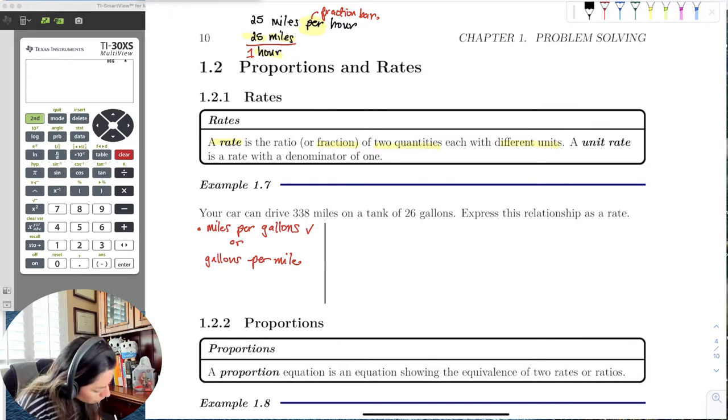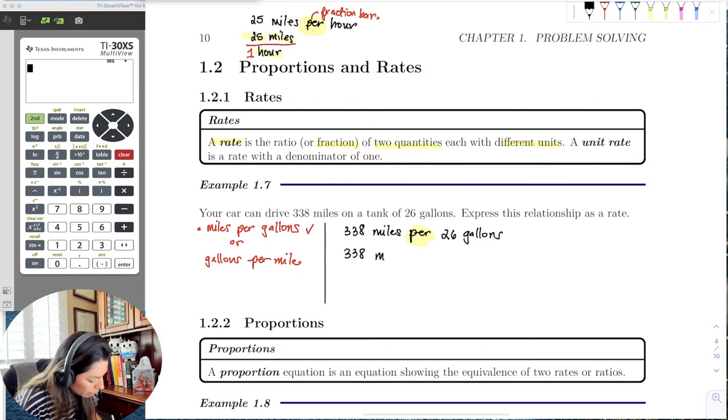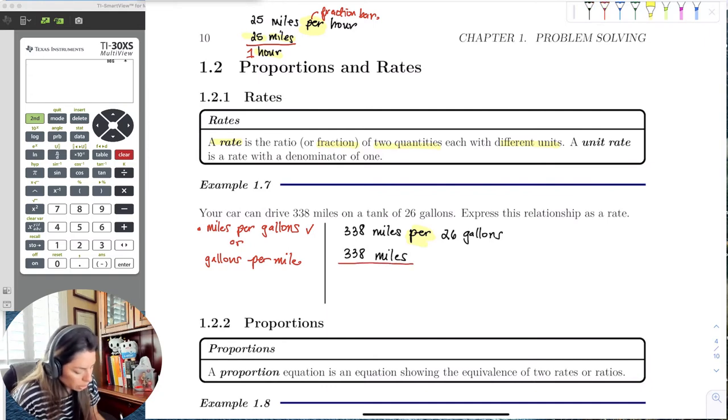Okay, so if we go 338 miles per 26 gallons of gas, now I see this word per, and I can see that I'm going 338 miles per, I'll highlight that yellow, 26 gallons. But we don't usually see the rates like this. This is the rate and we should reduce the rate as we possibly can because when we go by a car and we look at the sticker, it doesn't say 338 miles per 26 gallons. It just says miles per gallon.